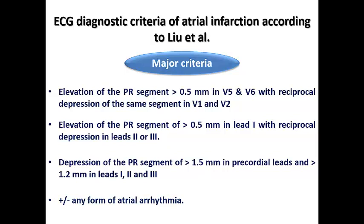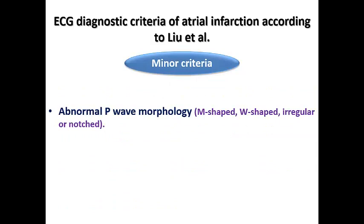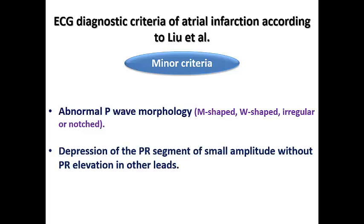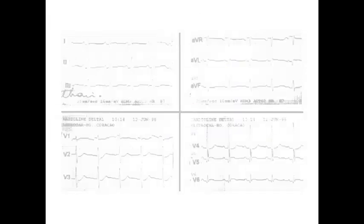The presence of one of these major criteria suggests atrial infarction in the context of ventricular infarction. Minor criteria — which are not sufficient alone to diagnose atrial infarction — include abnormal P wave morphology such as M-shape, W-shape, irregular or notched shape, or flattened P wave, and depression of the PR segment of small amplitude without accompanying PR elevation. These minor criteria alone are not enough to diagnose atrial infarction without a major criterion.